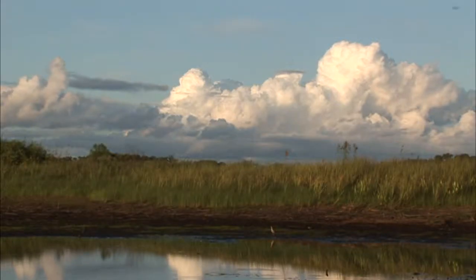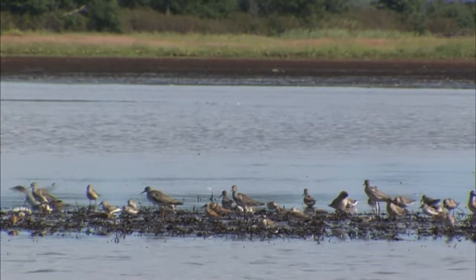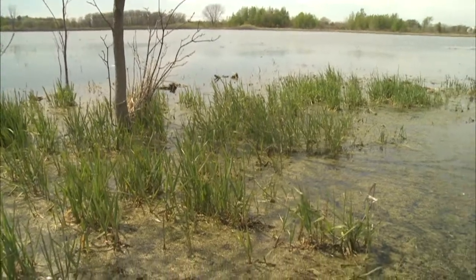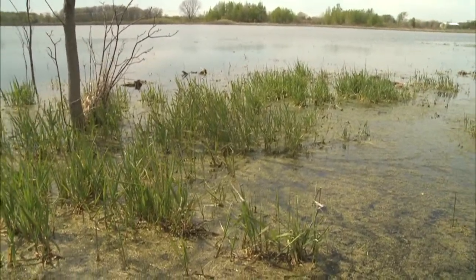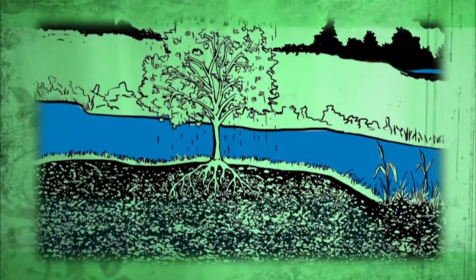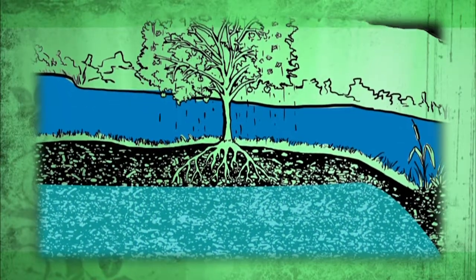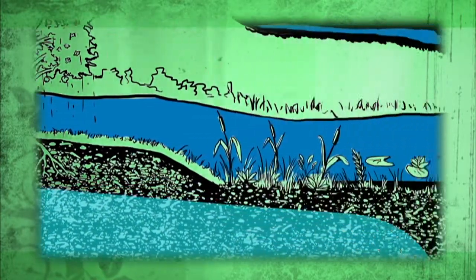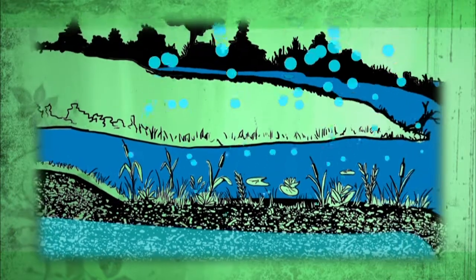Wetlands also protect against erosion by acting as shallow water buffers, with vegetation between deeper waters and shorelines. And finally, wetlands often link groundwaters with the surface, where sunlight and evaporation can return water vapor to the atmosphere.